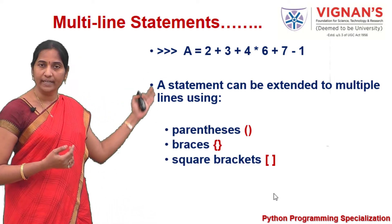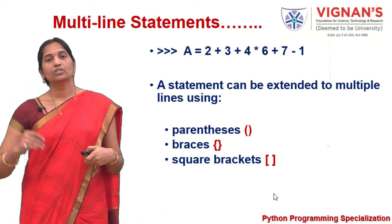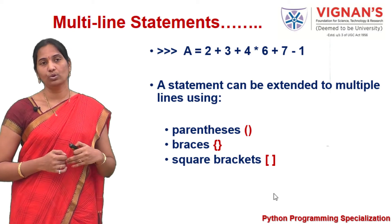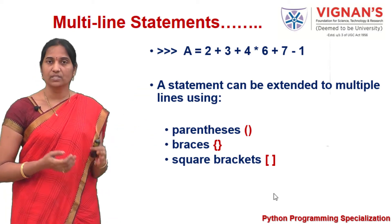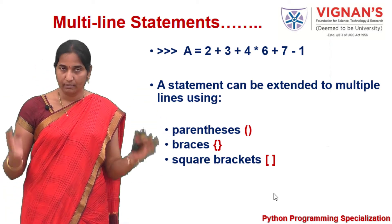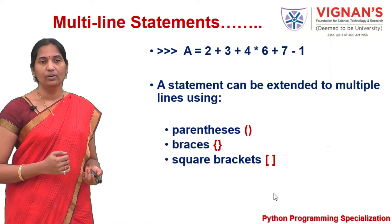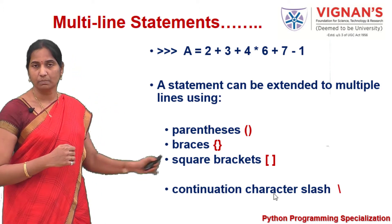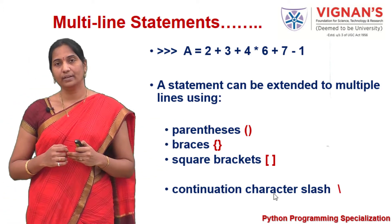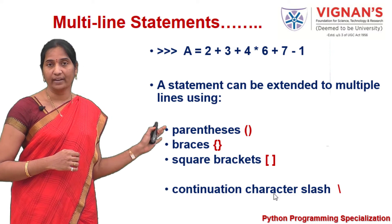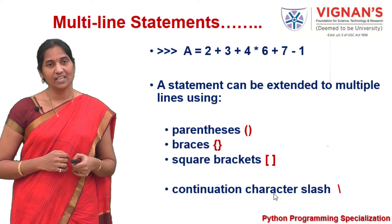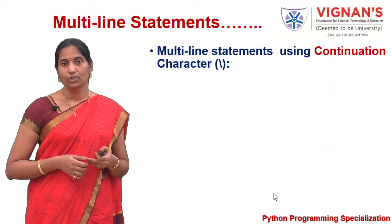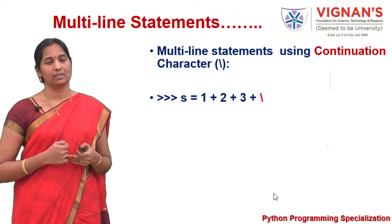Whenever you open any of these braces, until you close that brace, the statement is constituted as a single statement even if it extends to multiple lines. Or you can explicitly indicate the extension of a single statement to multiple lines by using the backslash character as a continuation character. Let's see how we can use this continuation character — the backslash symbol — to indicate the extension of the statement to the next line.